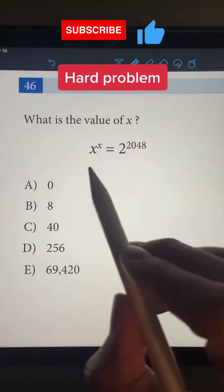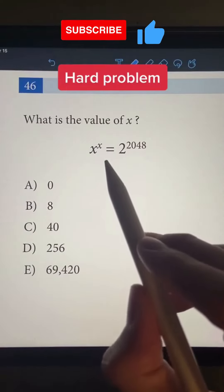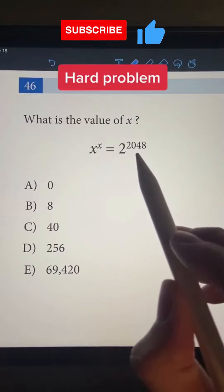The problem is super weird, but I'll show you how you can solve it. We have some number to the power of itself equal to 2 to the power of 2048.